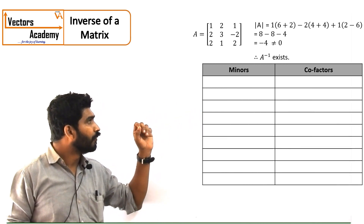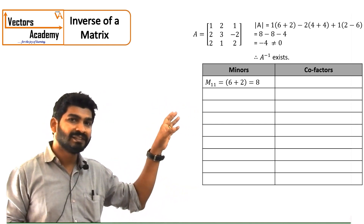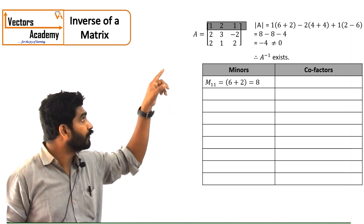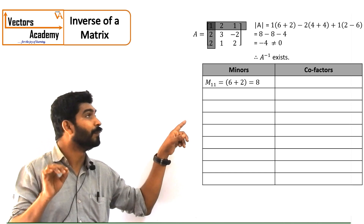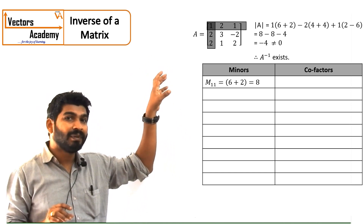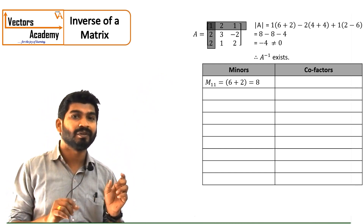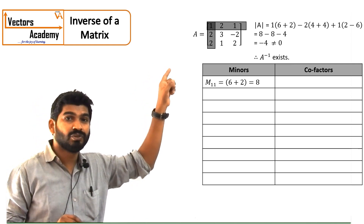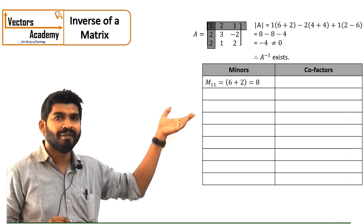Now how do we find the minors? For example, the first minor M11 — if you have to find this minor, I have to remove the first row and the first column. M11 indicates the first row and the first column. The 4 elements which are remaining, I have to solve the determinant of those 4 elements — a 2 by 2 determinant. That will give you 6 plus 2, which comes to 8. So M11 is 8.